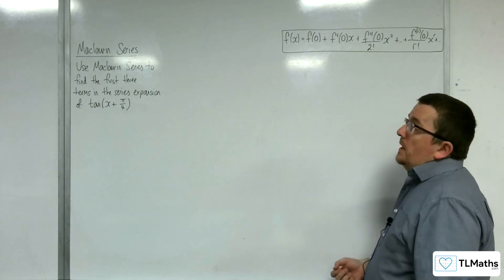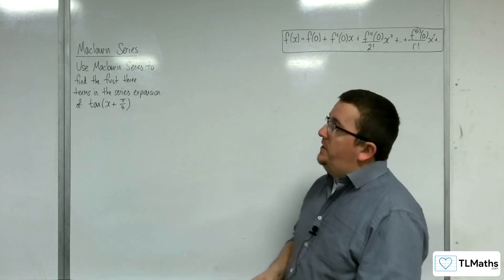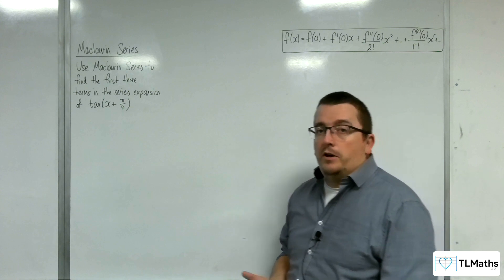So in this video, we're going to use Maclaurin series to find the first three terms in the series expansion of tan of x plus pi over 4.